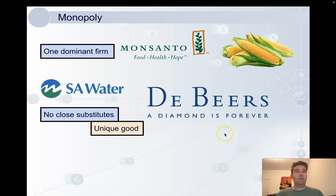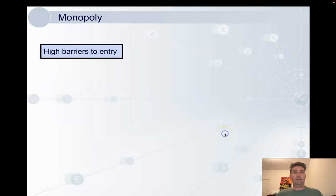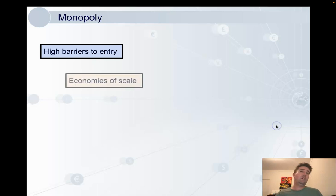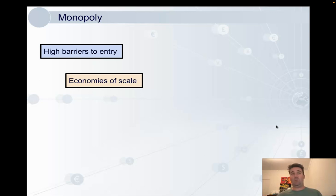It is extremely difficult for a competitor to enter a monopoly market — there are high barriers to entry. One reason can be the economies of scale that the monopoly firm has. Think of SA Water and the pipes going to every single property in the state; they can do it at a low cost because they do it on such a scale. The only way another firm could compete is if they also produced at such a scale, which is practically impossible.